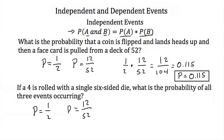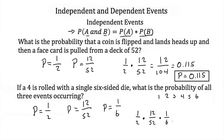Next we're going to roll a single 6-sided die and we want to know the probability of getting a 4. There's a 1, 2, 3, 4, 5, and 6 on all the different sides of our 6-sided die, so the chance of getting a 4 is 1 out of 6. To find the probability of all 3 events occurring, we take 1 half and multiply it by 12 over 52, then multiply that by 1 over 6. 1 times 12 is 12, times 1 again is still 12. 2 times 52 is 104, and 104 times 6 is 624.